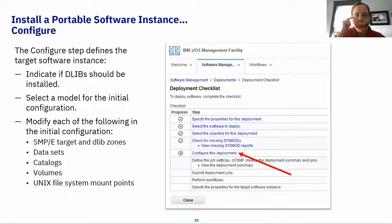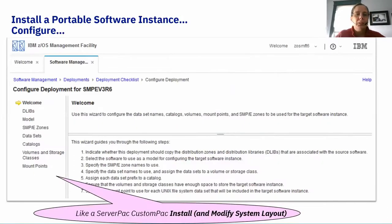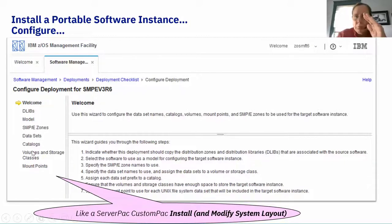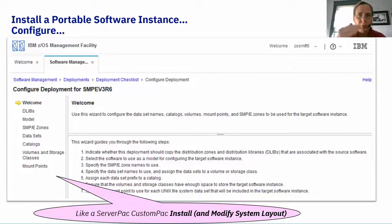The next section is Configure, which is where I spend most of my time. This is where you tell ZOS MF Software Management exactly what you want that Software Instance to look like — much like 'Modify System Layout' in ServerPac. Once you're in Configure Deployment, you move into a smaller mini-wizard with steps under it. Don't worry about missing something — all steps are guided and handled for you.